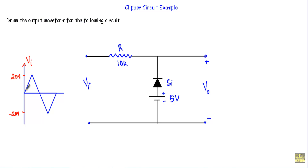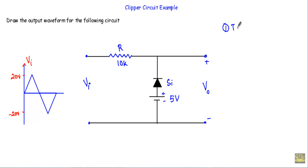Here we will apply a triangular waveform with maximum value 20 volt and minimum value minus 20 volt. This Si indicates that the diode is made of silicon. We also have a bias voltage of 5 volt. So the first step is to find out the transition voltage.